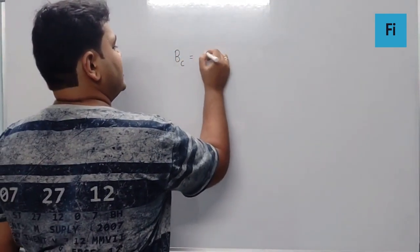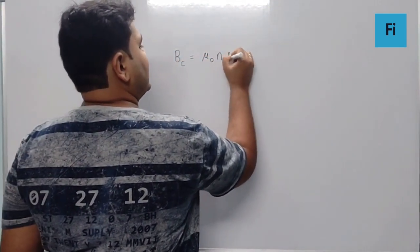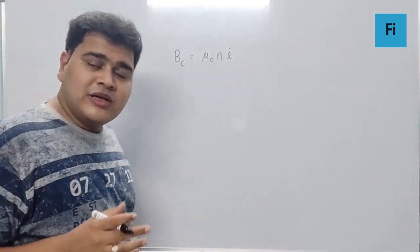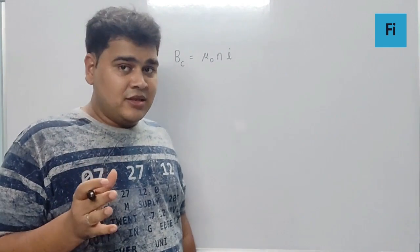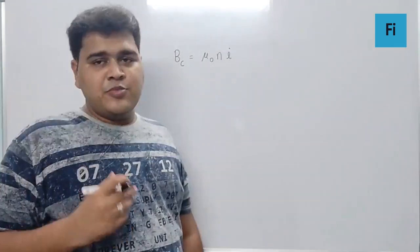The magnetic field at the center of the solenoid is given by μ₀nI, where μ₀ is the permeability of free space, n is the number of turns per unit length, and I is the current passing through it.